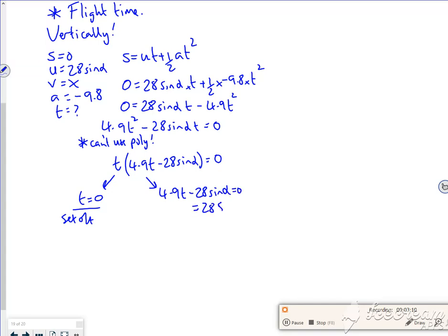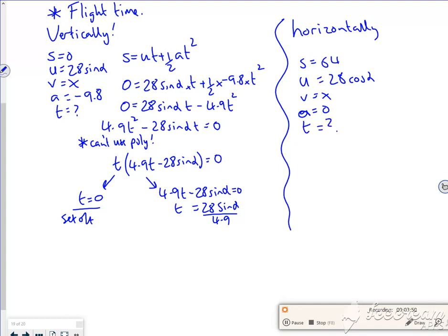So if I take the 28 sin alpha over and divide by 4.9, that gives me a t value I can use. I can also work out the time horizontally. Horizontally I know that s is 64, u is 28 cos alpha, not bothered about v, a is nothing, and t is unknown. Once again s = ut + ½at², but the at² term goes, so I've got 64 = 28 cos alpha · t.